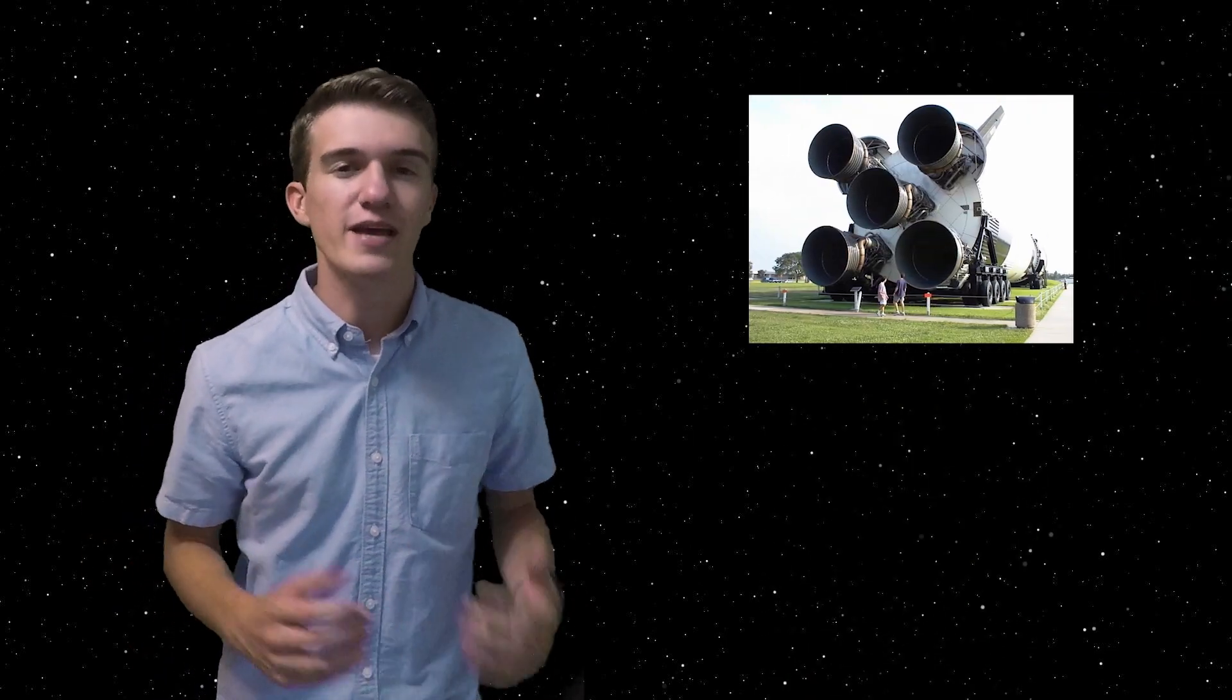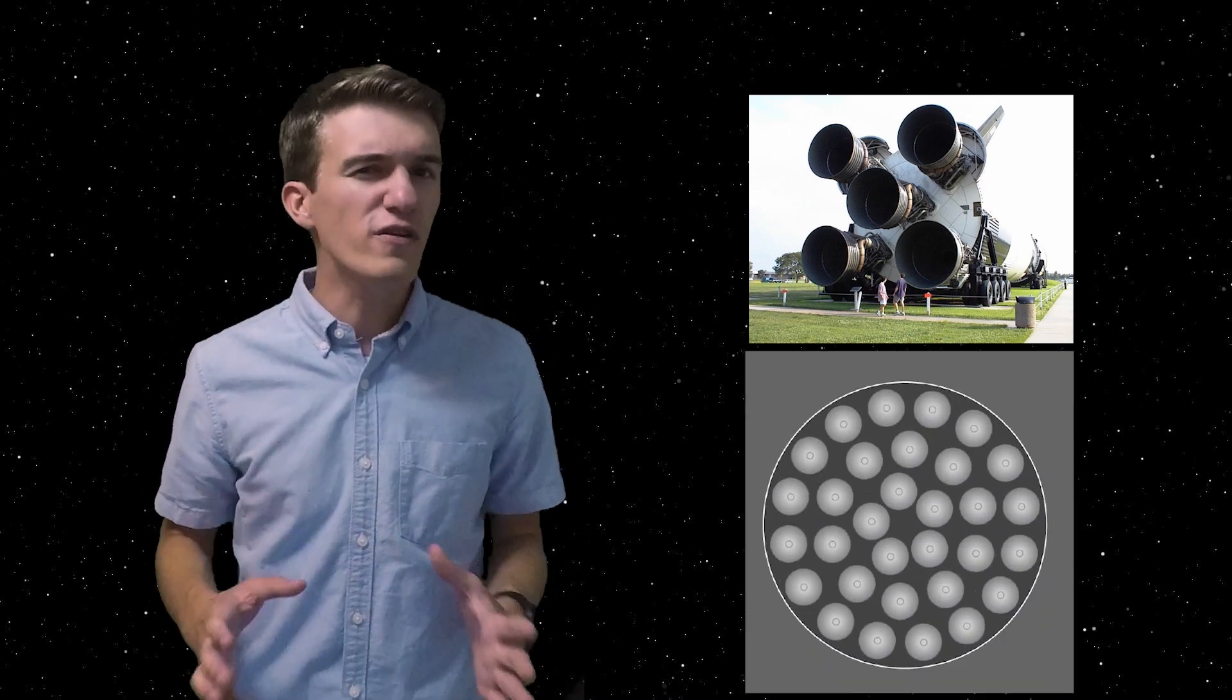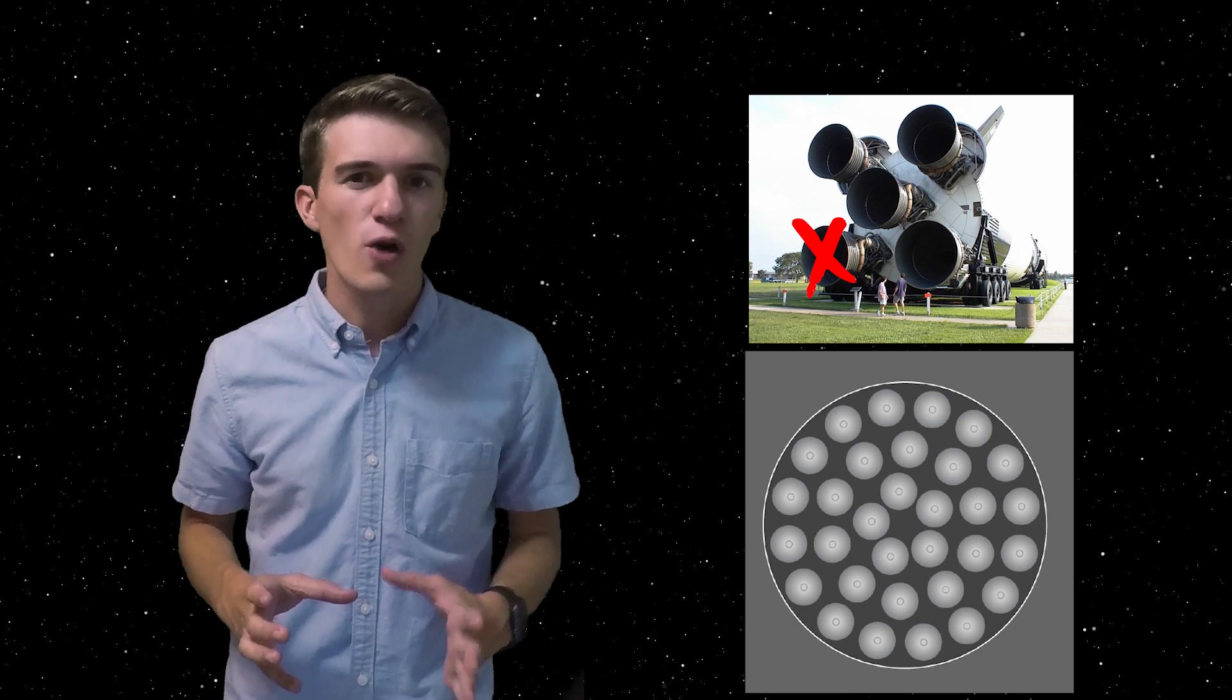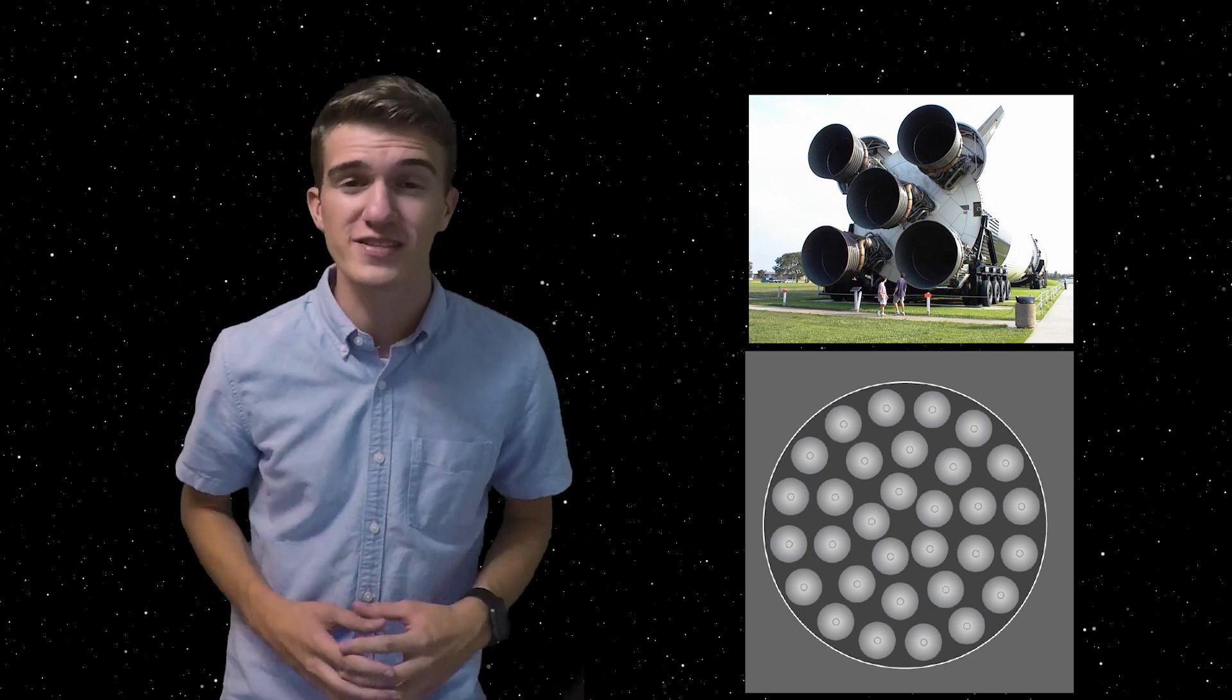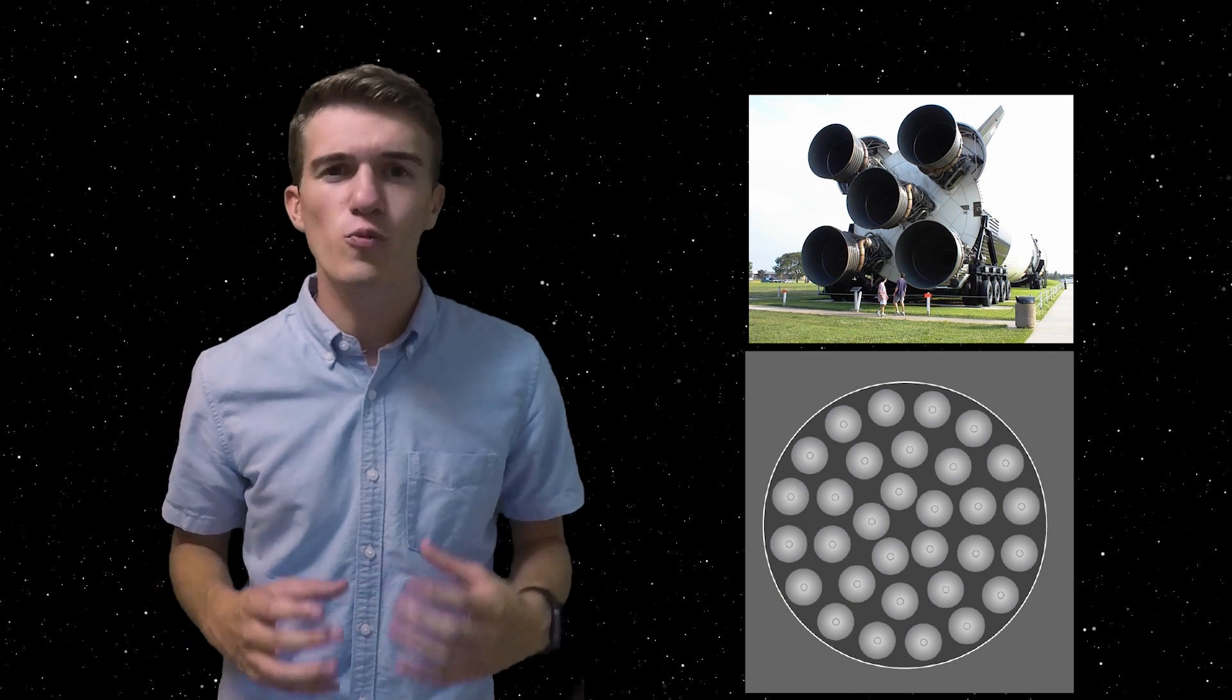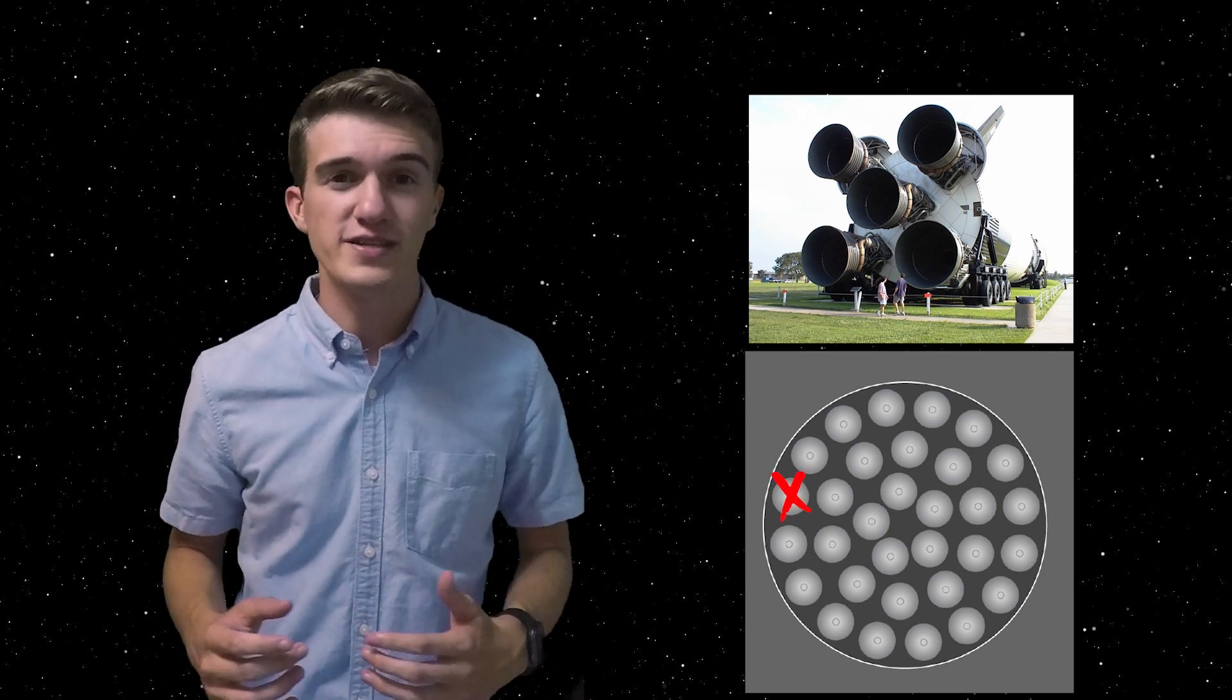Now another benefit over the Saturn V is the engines that are going to lift the rocket up into space. Saturn V had five engines, hence the name Saturn V, whereas BFR plans to have 31. So if one of those engines were to fail during launch, one out of five is crucial to a mission and could possibly be devastating. Whereas for BFR, one out of 31, that isn't expected to make a difference. It's actually theorized that four or five engines could go out, and it still wouldn't impact the overall mission.